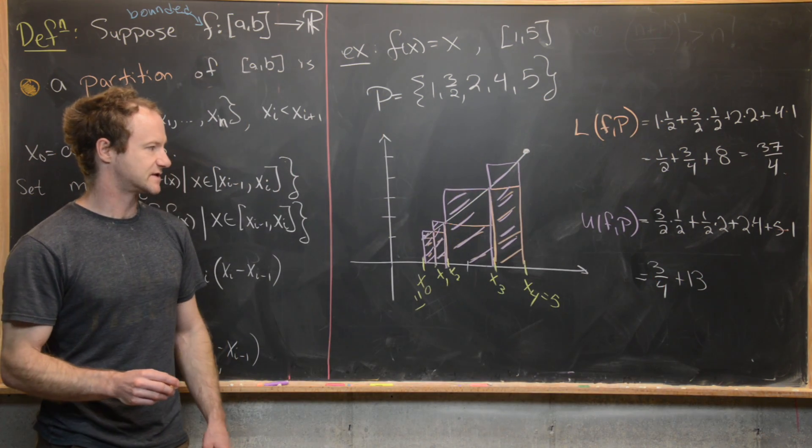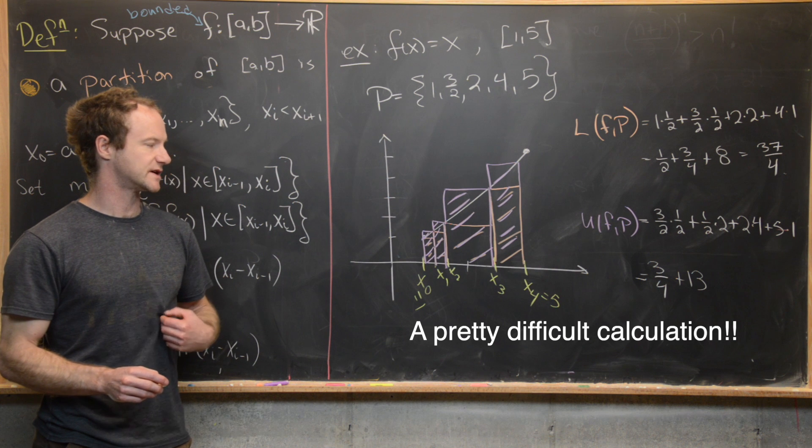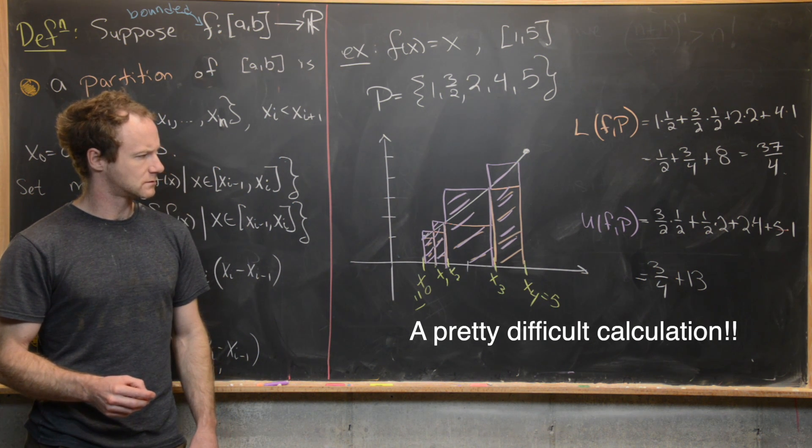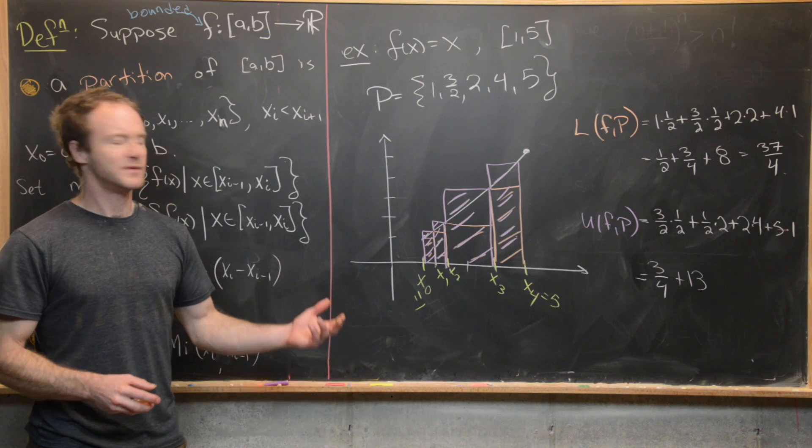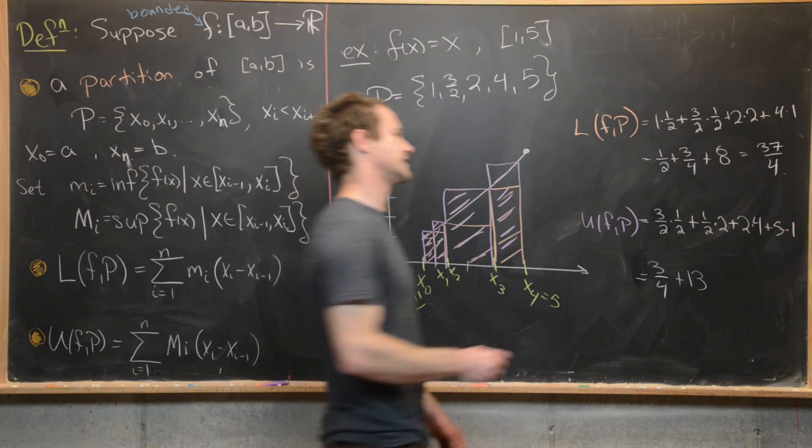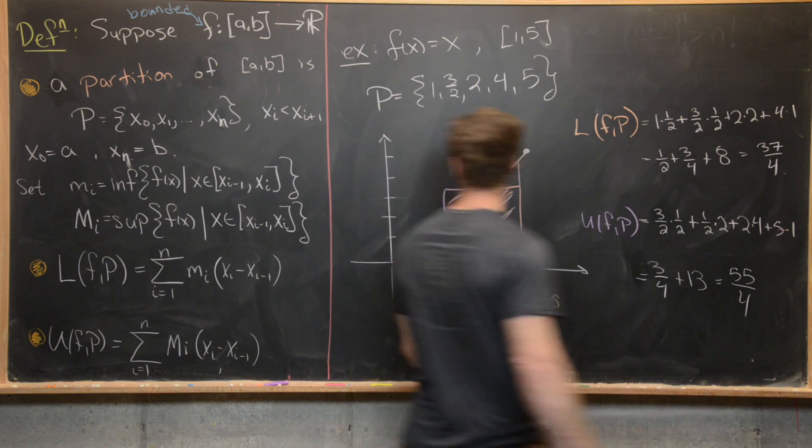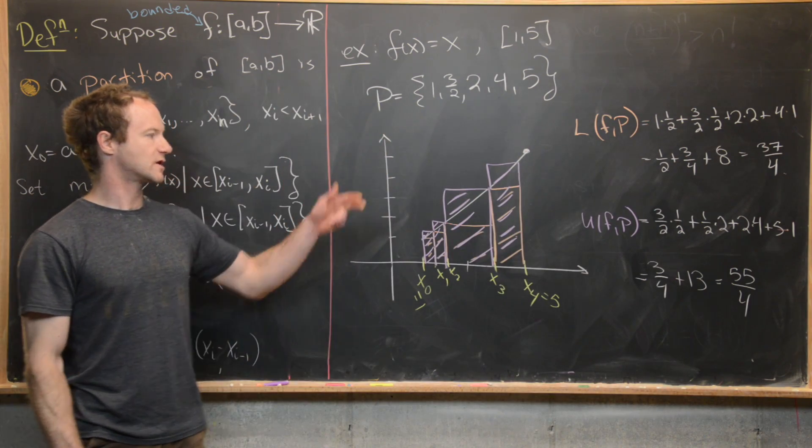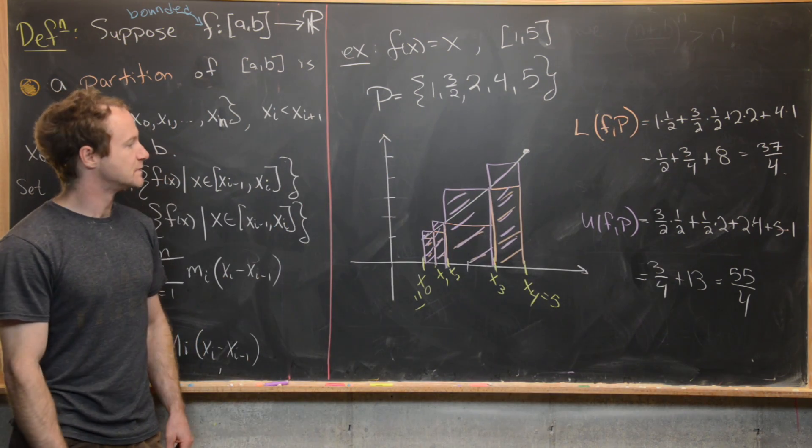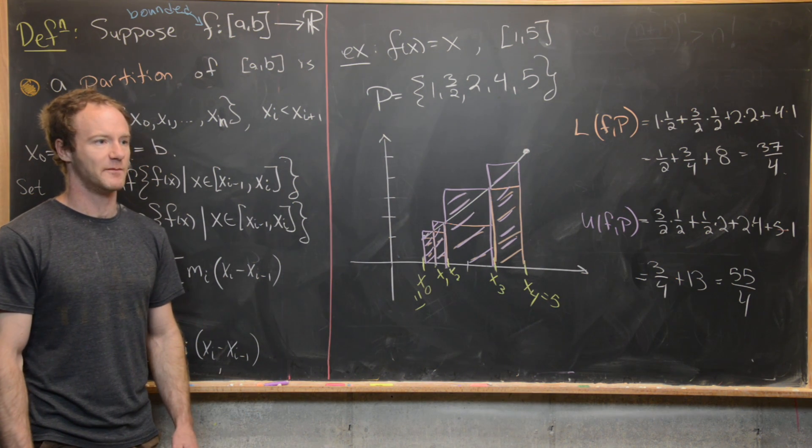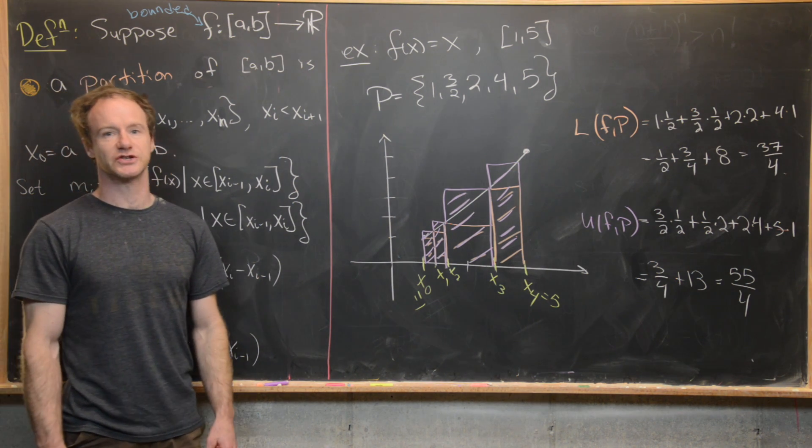But let's see what that is. So 3/4 plus... So that's going to be 52/4 plus 3/4. So that's going to be 55/4. So there's our lower sum and our upper sum. So let's maybe stop here and we'll come back in the next video and talk about refinements of partitions.